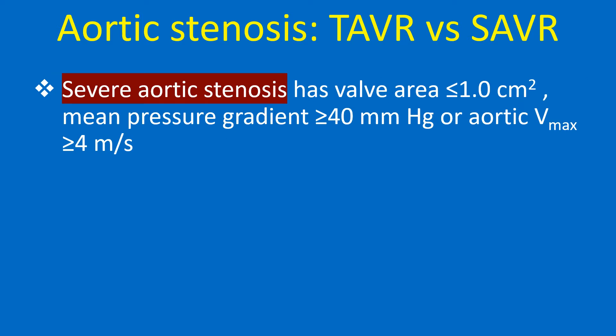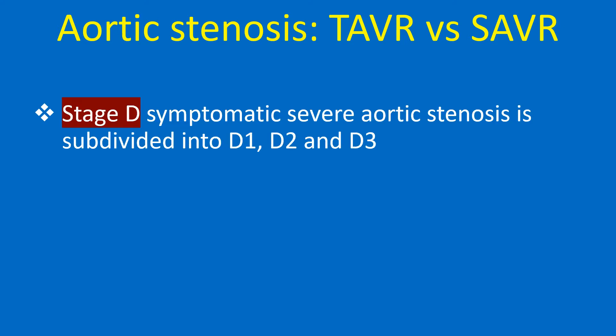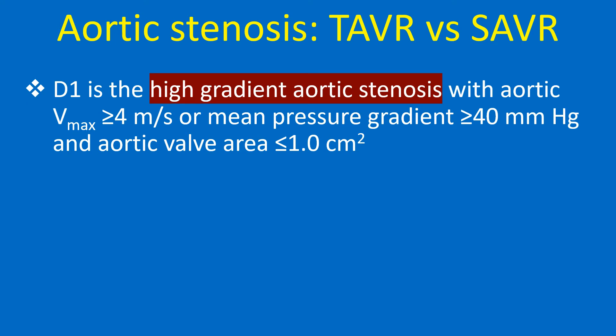Severe aortic stenosis has valve area less than or equal to 1 square cm, mean pressure gradient more than or equal to 40 mmHg, or aortic Vmax more than or equal to 4 m per second. Very severe AS has aortic Vmax more than or equal to 5 m per second, or mean pressure gradient more than or equal to 40 mmHg and aortic valve area less than or equal to 1 square cm.